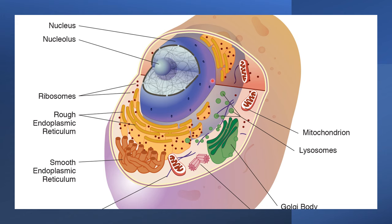There are various organelles in the cell such as the nucleus, ribosomes, rough endoplasmic reticulum, smooth endoplasmic reticulum, mitochondria, Golgi body, and lysosomes. It is the lysosomes that we will talk about in the further slides.